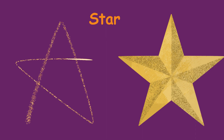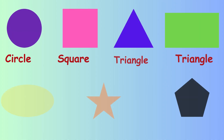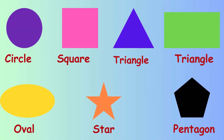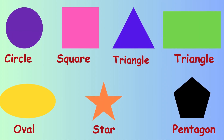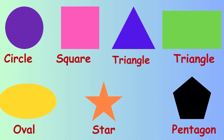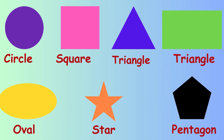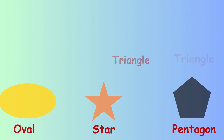Good! So we have now learnt: circle, square, triangle, rectangle, oval, star, pentagon. Which is this one? This has six sides — it's a hexagon shape.